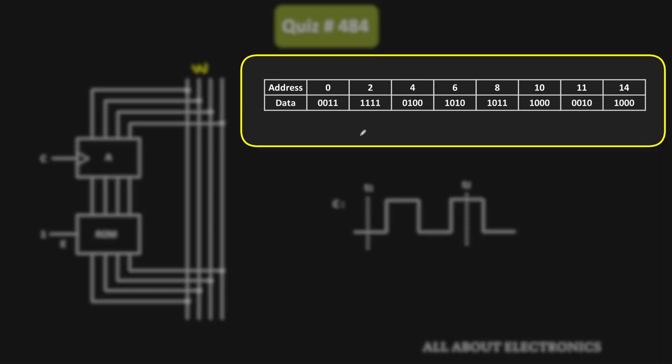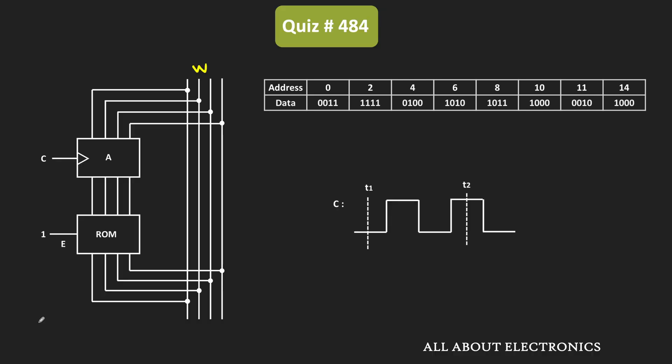We have been given a partial table corresponding to the data stored in the ROM at specific addresses. At time t1, the data available on the data bus is 0110. This data will get loaded into the shift register at the rising clock edge, and after the rising edge, the same will be available at the output of the shift register — that is, as input to the ROM. So 0110 will be the address input for this ROM.